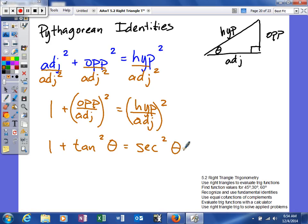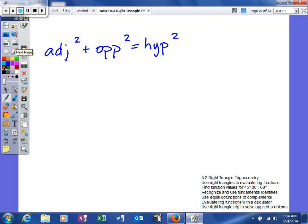So that's one of our Pythagorean identities, as you can see right here. And now we're going to look to see how we can create the other two. So we'll start off by doing the other thing. Last time we divided by the adjacent side squared. This time we'll divide by the opposite side squared. Let's see what we get.